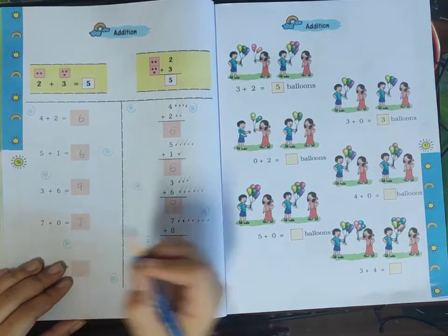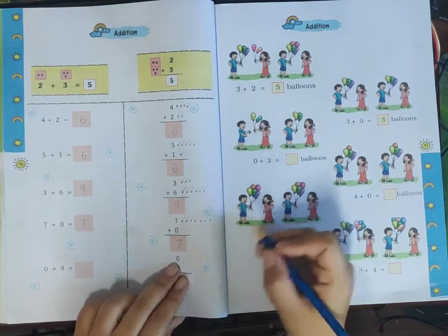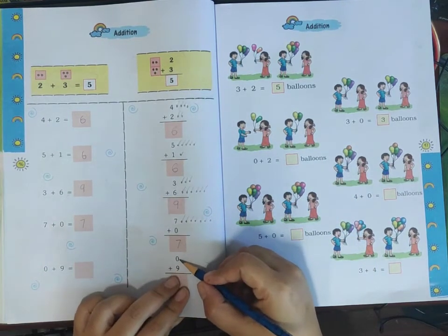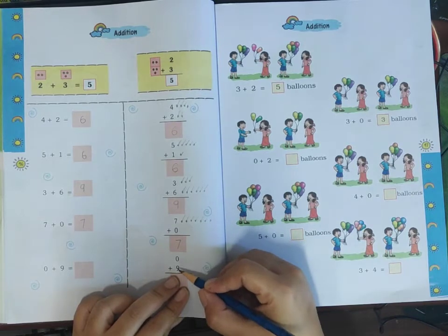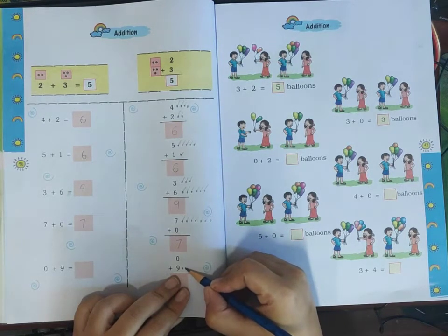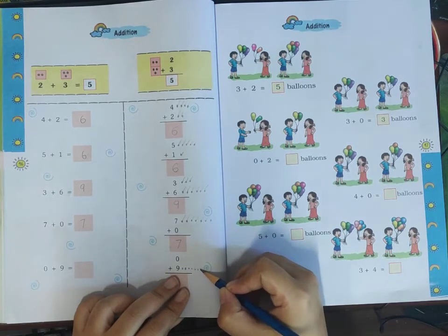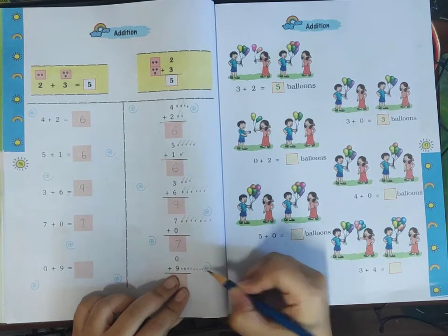Now zero plus nine. Zero means we have no dots at the start, and then we add nine dots. Let me count: one, two, three, four, five, six, seven, eight, nine. Zero plus nine equals nine.